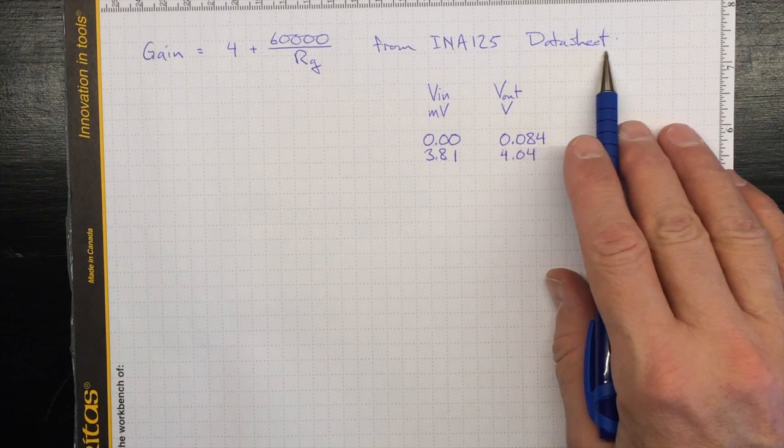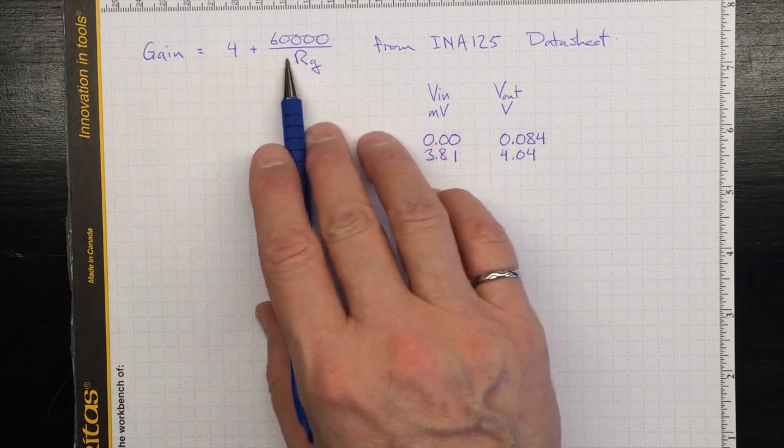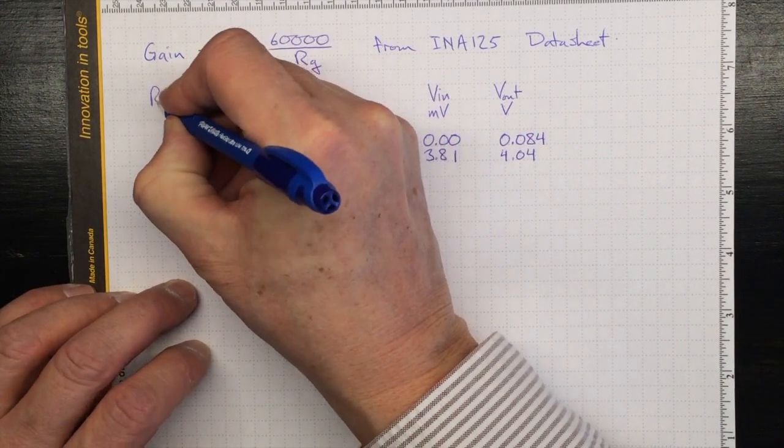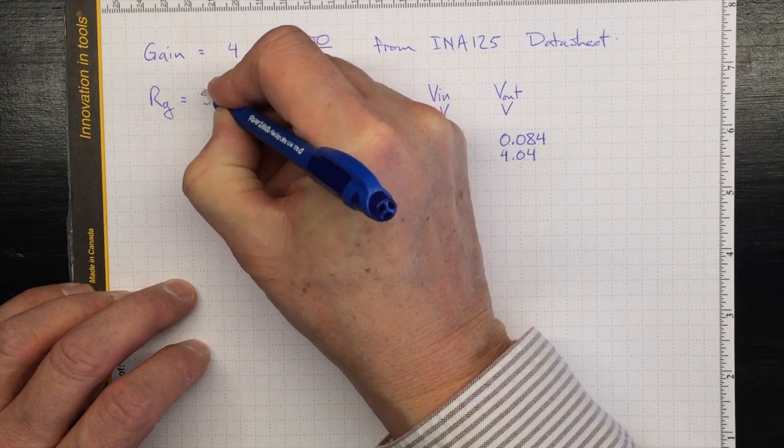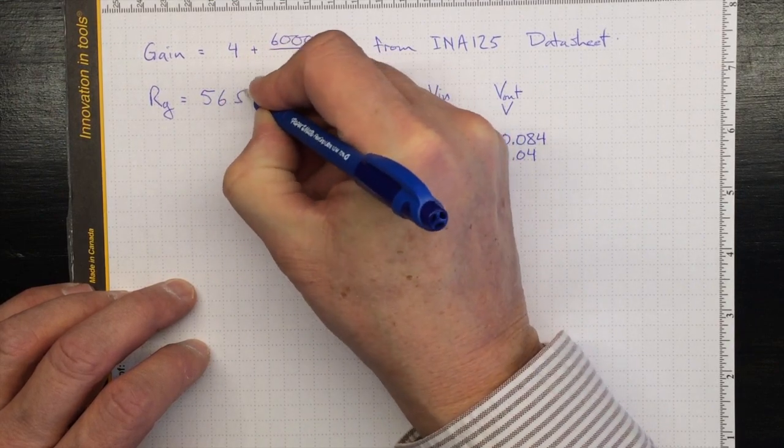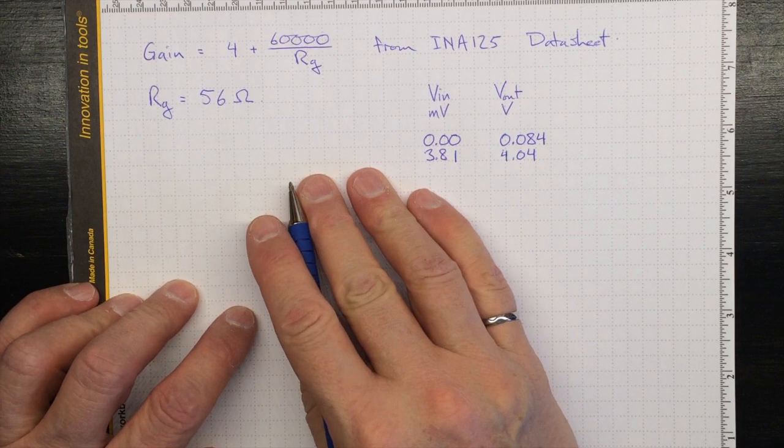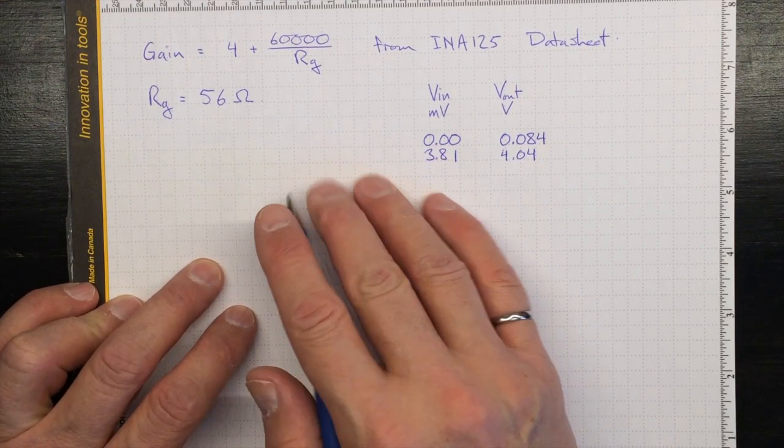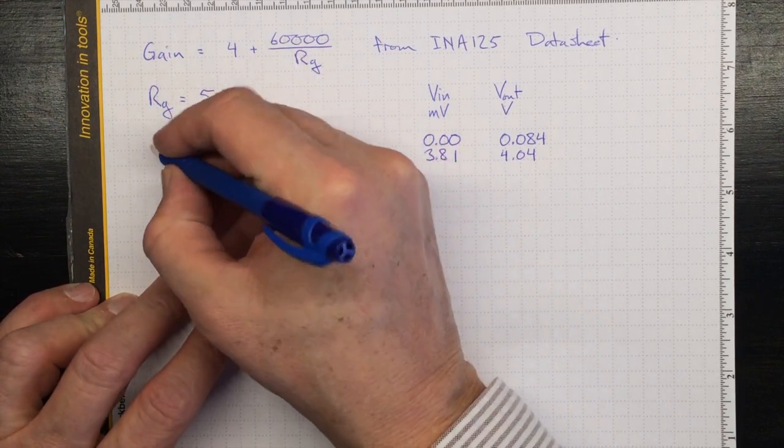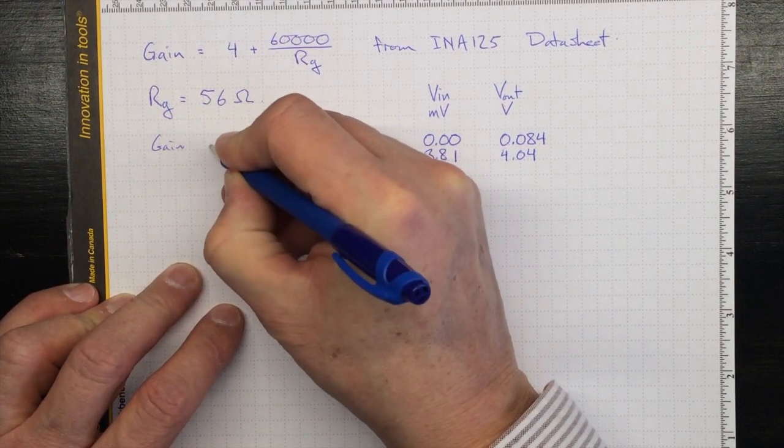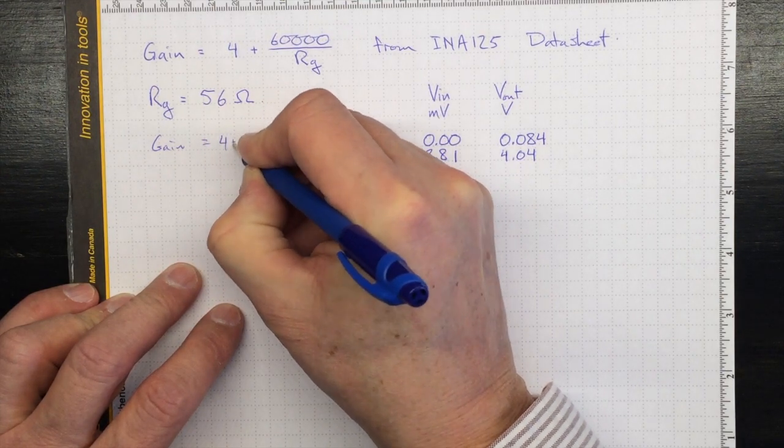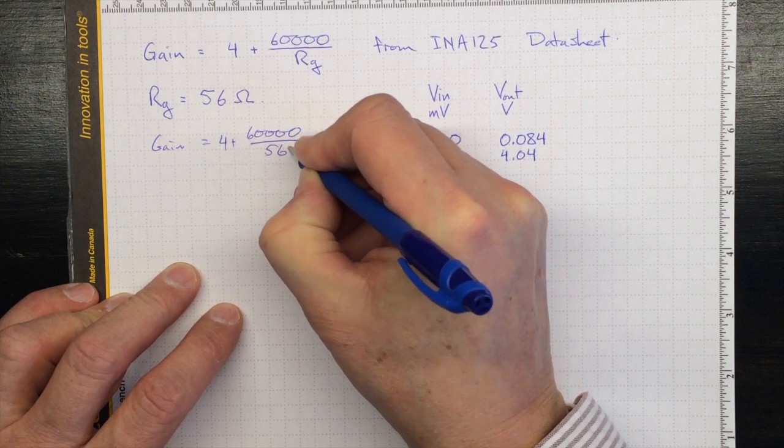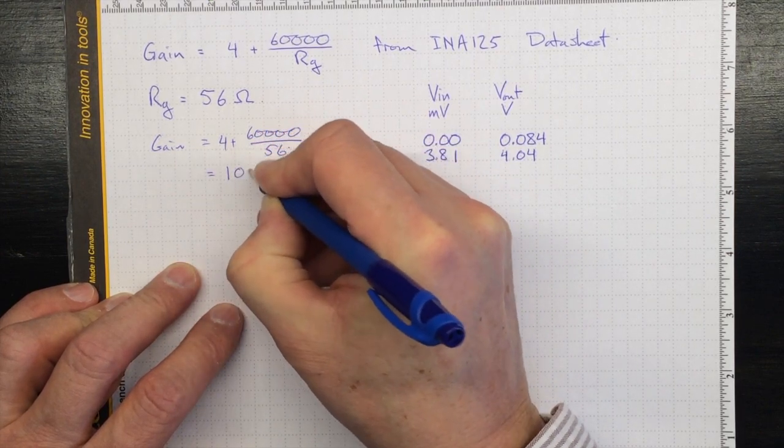From the data sheet, we expect that the gain will be following this formula here, determined by the gain resistor that we've used. We chose a gain resistor of 56 ohms. I didn't talk much about why we chose it, I just chose it so it would be a fairly large gain, so that we could see something happening. If we plug that in, then we should wind up with a gain of 4, plus 60,000, divided by 56, and if you punch the numbers, that's 1,075.